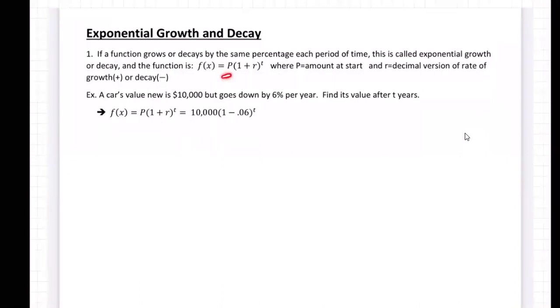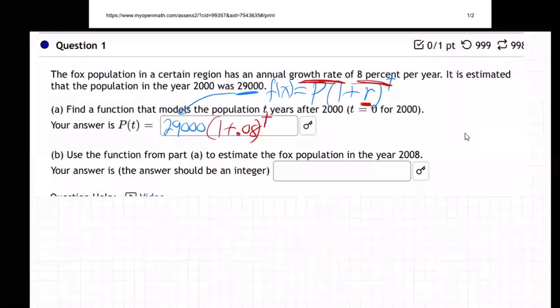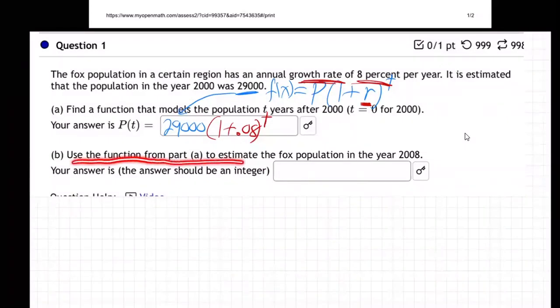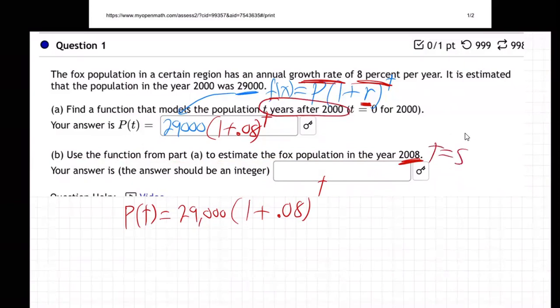See how we put the starting amount right here? 29,000 times 1 plus the rate of change per year, 8% per year, written as a decimal to the t power, t years after 2000. That's what it's saying right here. P is the amount at the start, 1 plus r to the t. And r is the decimal version of the rate of growth positive or decay negative. So there we go. And then part b. Use the function from part a to estimate the fox population in the year 2008. So use the function to estimate. So I'm going to say the population at any time is 29,000, 1 plus .08 to the t. And they're saying the year is 2008. Well, t is the years after 2000. So that's t equals 8. Because that's 8 years after the year 2000. T is how many years after 2000.